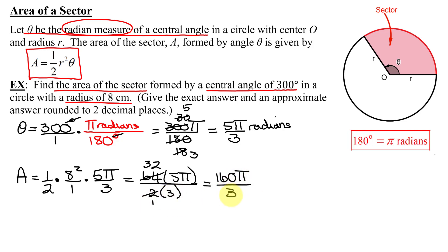So that is the area of the sector. And what are my units? They're going to be square units. And what units are those? Centimeters. So it's going to be centimeters squared. So the area of the sector A equals 160 pi divided by 3 square centimeters.